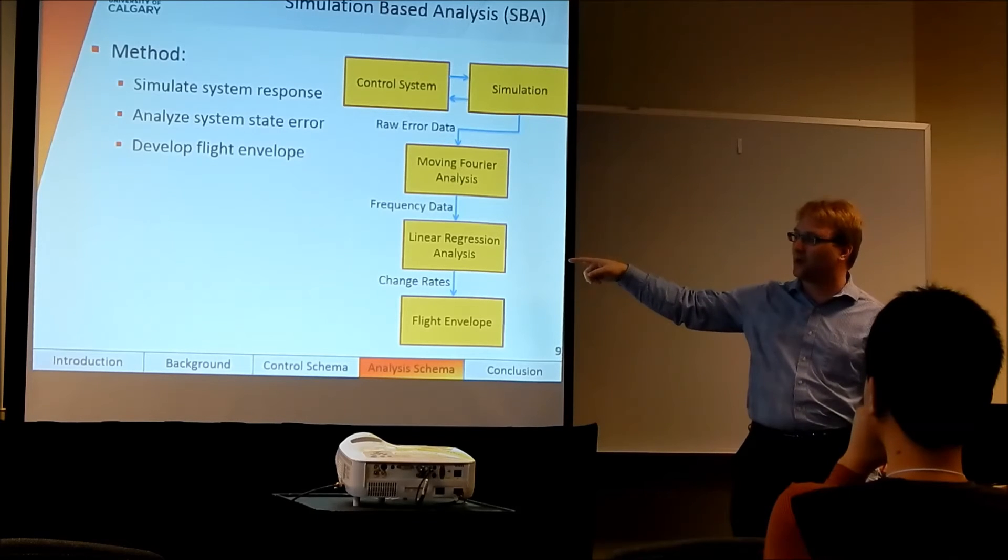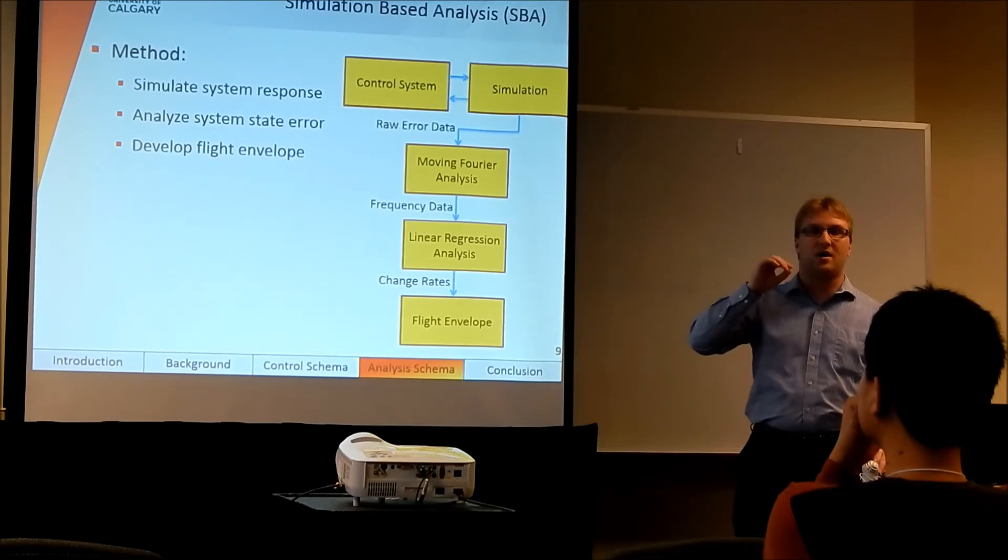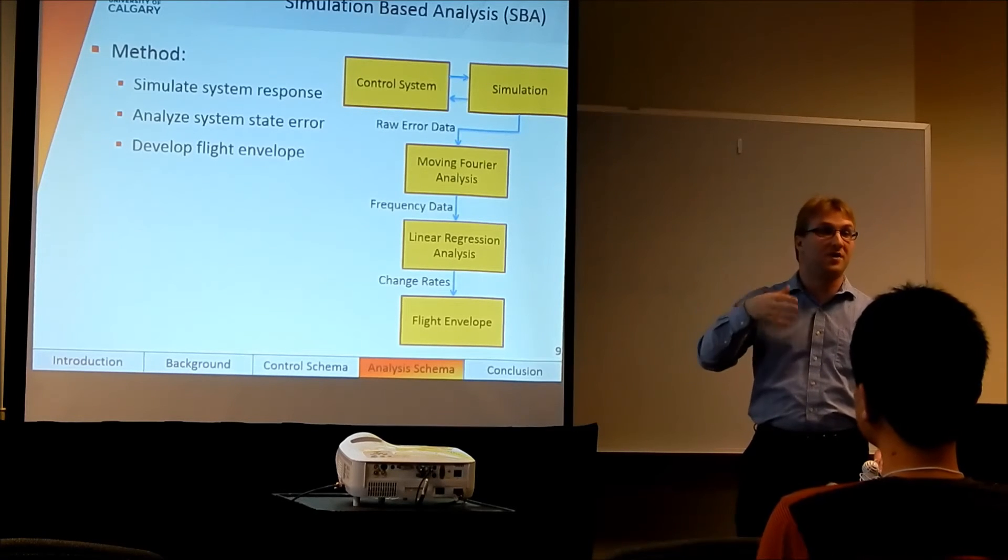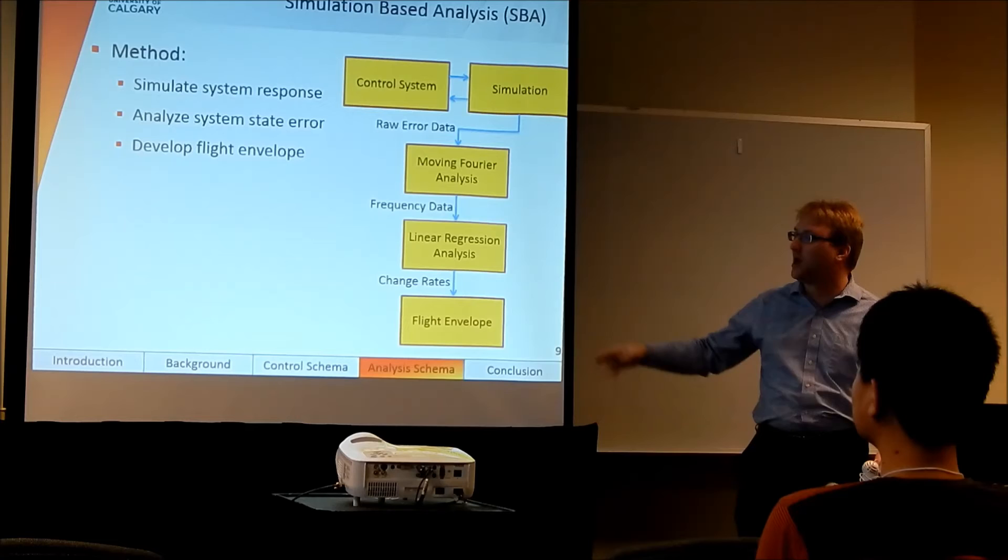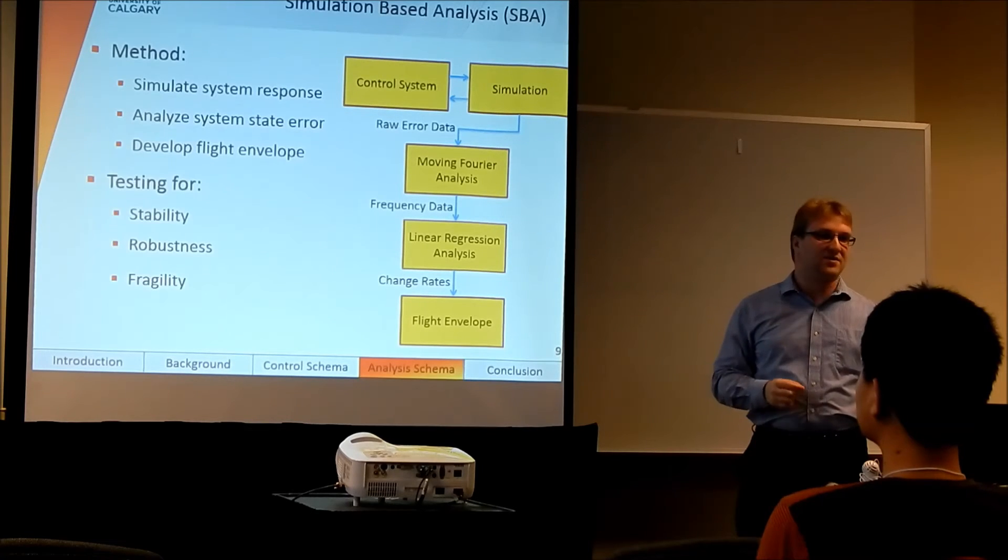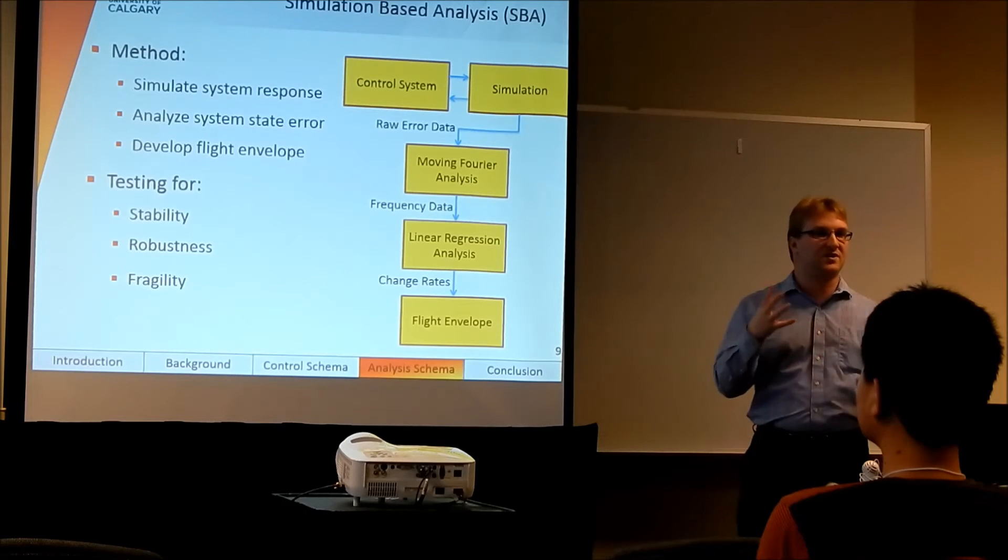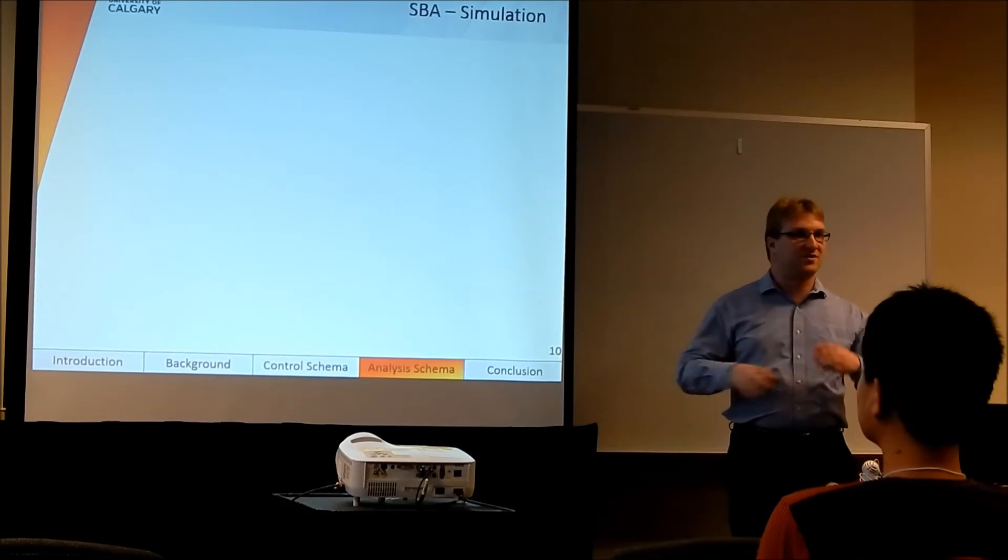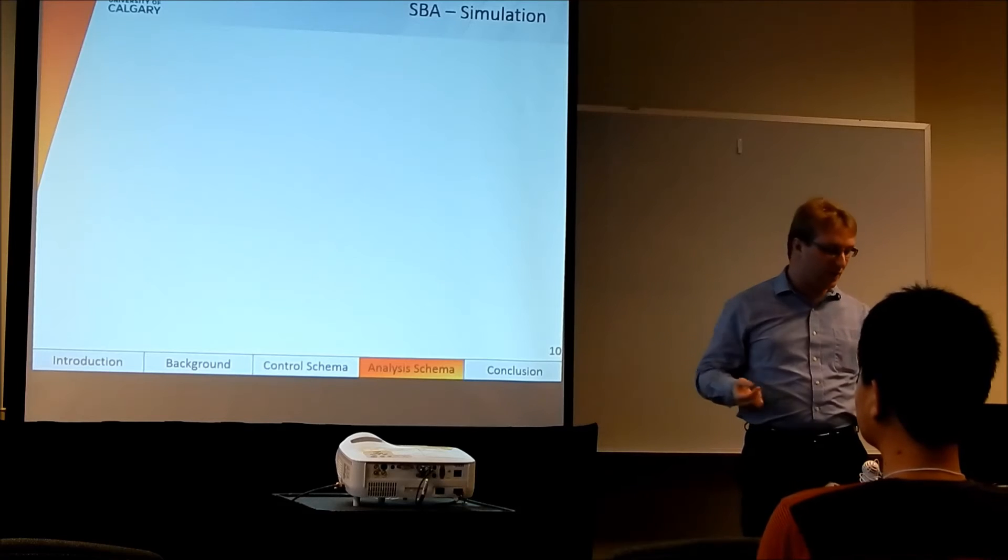We can then do a linear regression to figure out how quickly those frequency components are growing and shrinking. We want them all to be shrinking for a stable system, and then that provides us with the ability to create a flight envelope. So that allows us to test the system for stability, robustness, and fragility, which is essentially how well is the system actually performing.